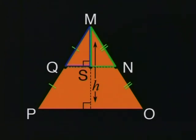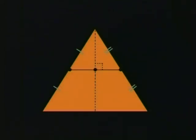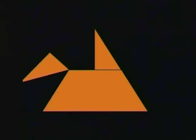We cut out the triangles, then we rotate triangle MSQ around point Q, and then rotate triangle MSN around point N, and so we created a rectangle like this.